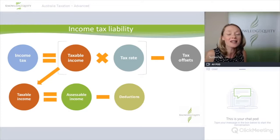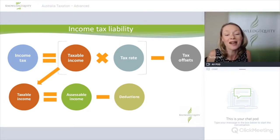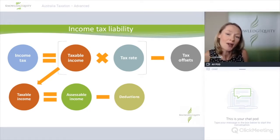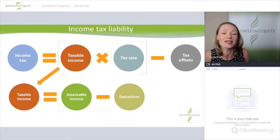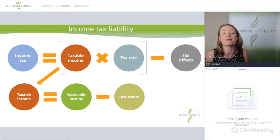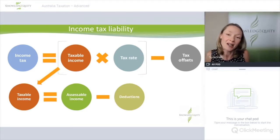How do we calculate our income tax liability for a company? In the same way as for all other taxpayers: income tax is calculated as taxable income multiplied by the relevant tax rate — either 30% or 27.5%. Then once you've worked out that tax, you take off any relevant tax offsets, such as the franking credit tax offset or the foreign income tax offset where you've received amounts subject to foreign withholding tax. In calculating taxable income, we look at assessable income and take off any allowable deductions.